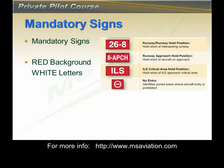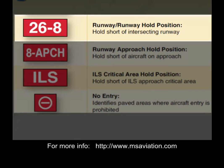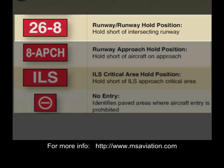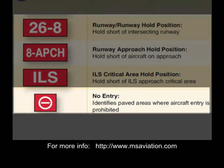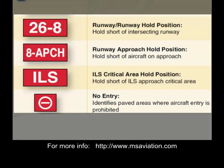Mandatory signs are red with white letters. The top sign shows that you are at runway 26 and 8. The second sign shows you are on the approach end of runway 8 and you need to hold short of aircraft on approach. The third sign indicates that you are at an ILS critical area hold position — you must hold short of the ILS approach critical area when it is active. The last sign indicates that you cannot enter the area, placed where pavement exists but an aircraft may not enter.